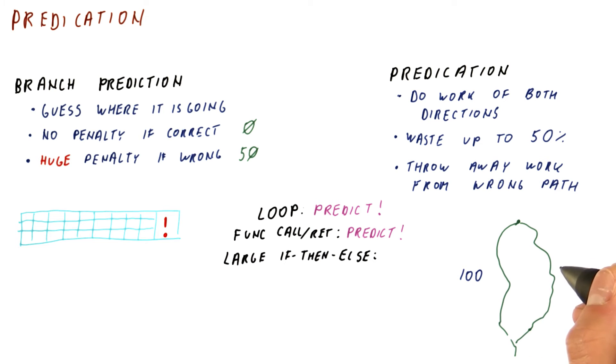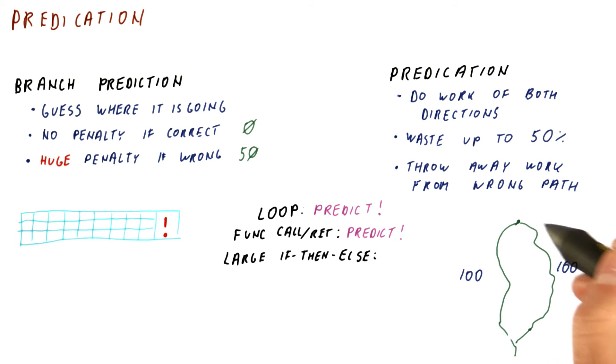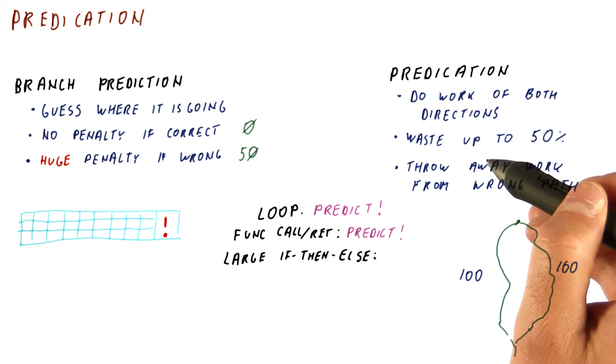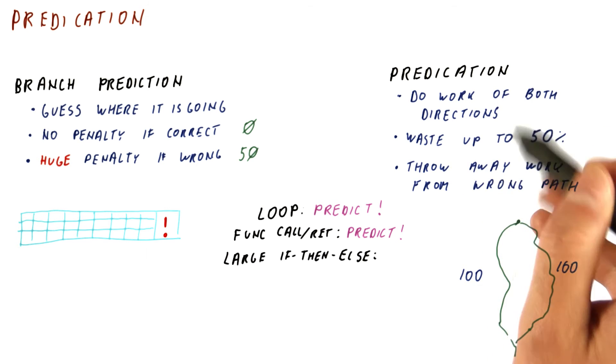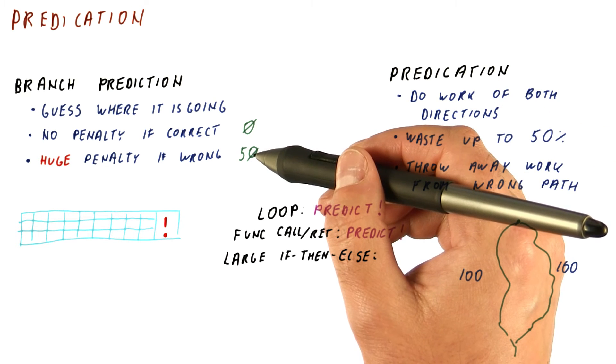We will execute 200 instructions, waste 100 of them either way. So somehow the amount of waste with predication here is larger than even the penalty of branch misprediction.